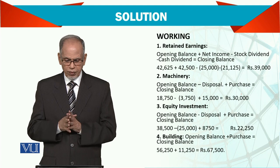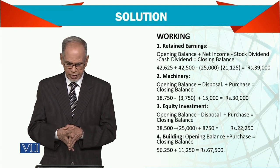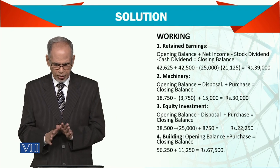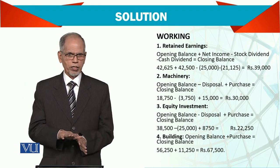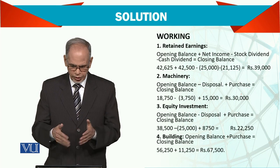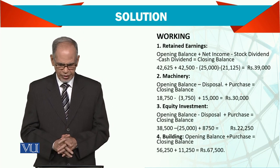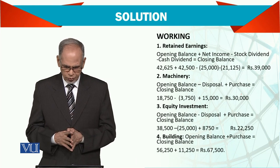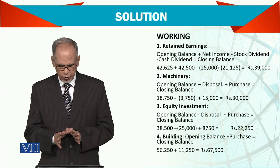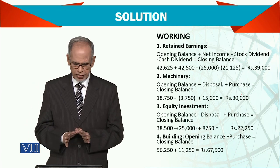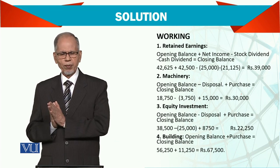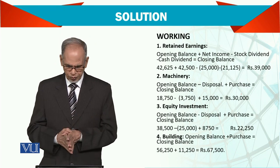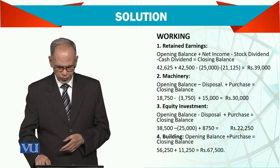In this case, we have to reconcile the retained earnings. Then for machinery, the formula is: opening minus disposal plus purchase equals closing. Using that formula, we work out how much machinery was purchased. For equipment and equity investments, the same formula applies — with three figures available in the equation, you solve for the fourth. Similarly, for building, the same formula is used.